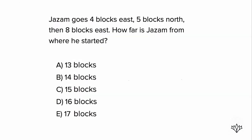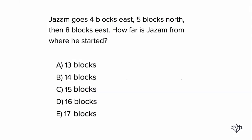All right, let's get this done with Pythagorean theorem. This one says Jazam goes four blocks east, five blocks north, then eight blocks east. Let's just start with that. We know that Jazam is going four blocks east, five blocks north, then eight blocks east. You don't have to worry about east or west and what direction that actually is going to be on your paper for the math questions.